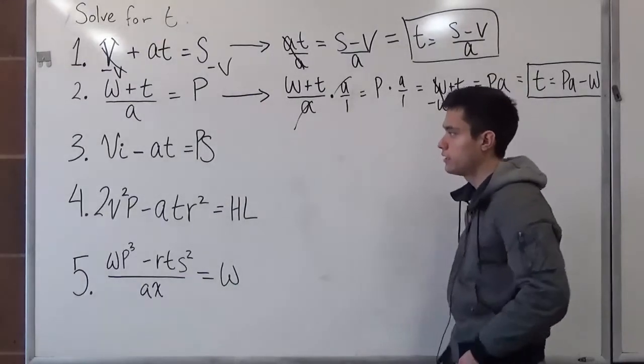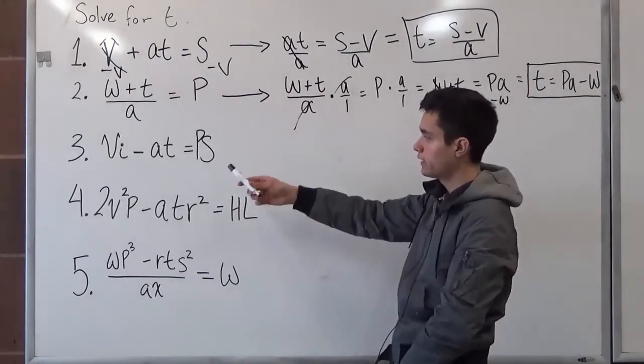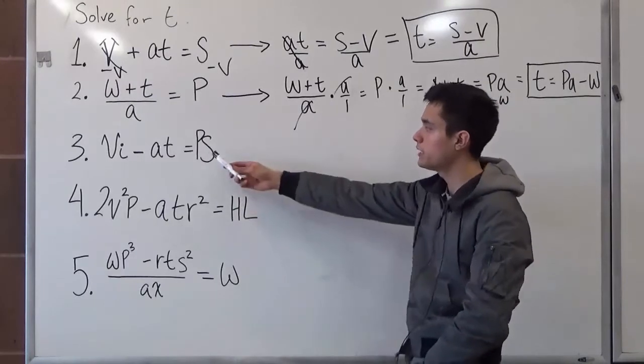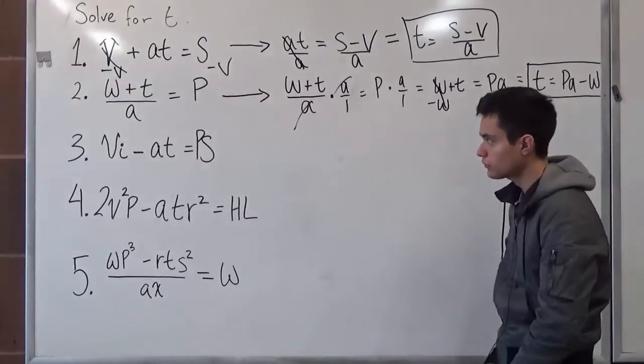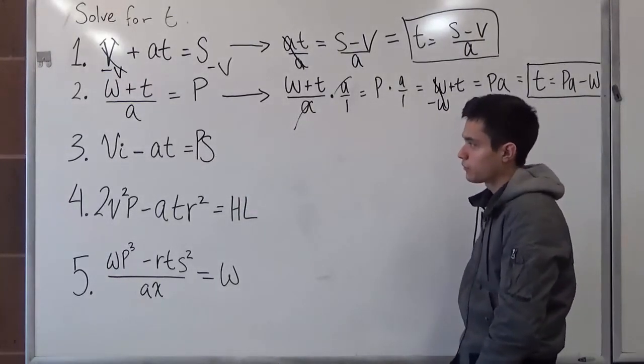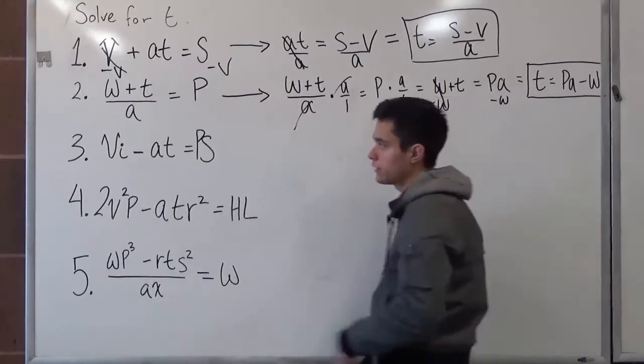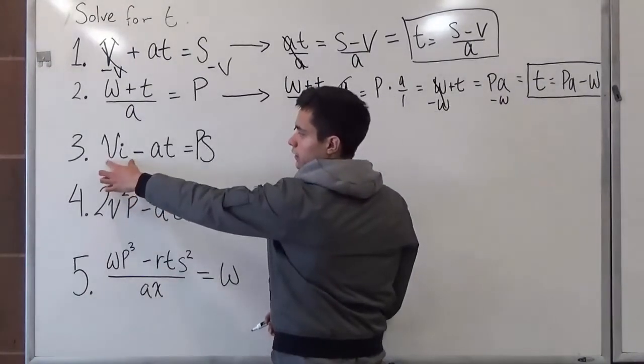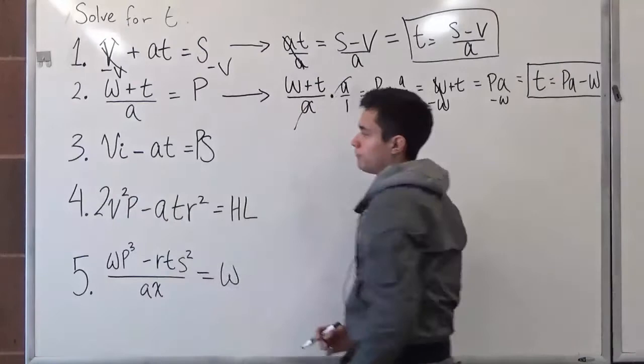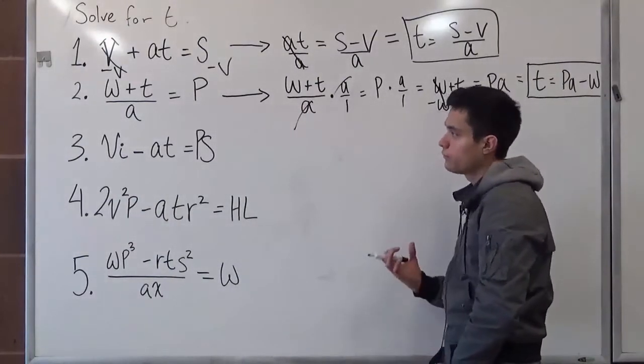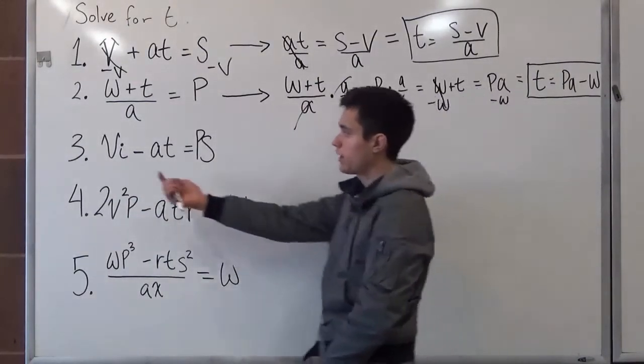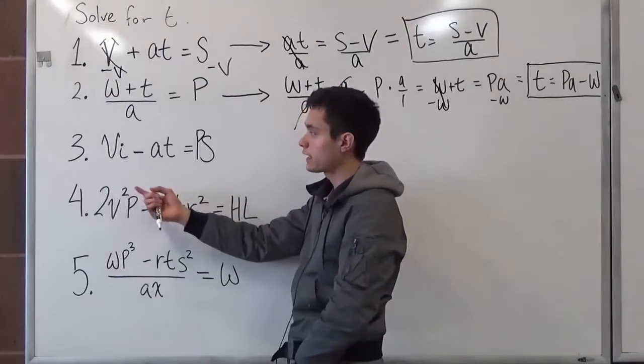Problem number three states v times i minus a times t is equal to p times s. So what we should do first is look at v times i as a whole. So don't get confused about, oh, since we have two values here, we have to subtract it.